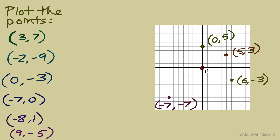Lastly, what about the point right in the middle at the origin? It also has an ordered pair. It's where we start when thinking about ordered pairs, and it corresponds to the ordered pair (0, 0). Starting from the origin, if we go no units left or right and no units up or down, we'd plot a point right at the origin, so its ordered pair is (0, 0).